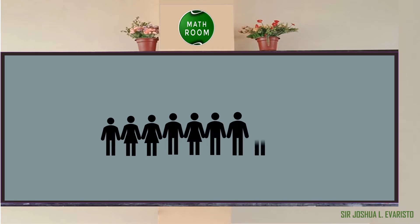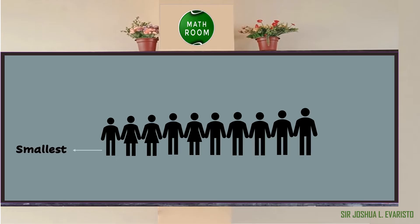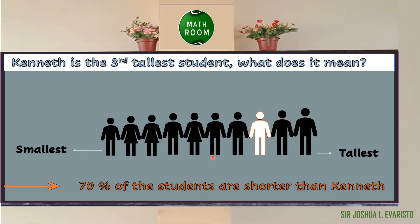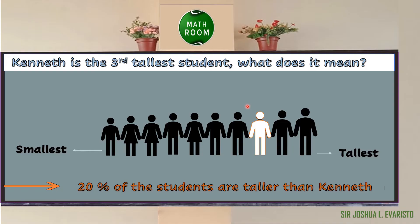Suppose that there are 10 students in a row forming a line according to their height from left to right, with the smallest on the left and the tallest on the right. Let us say Kenneth is the third tallest student. As you can see, there are seven students shorter than Kenneth, which means that 70 percent of the students are shorter than Kenneth.